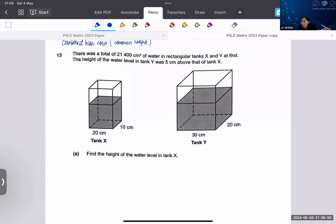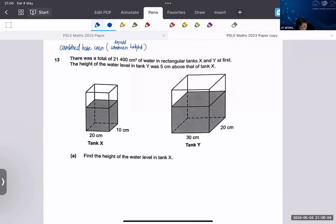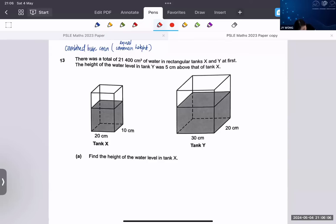There was a total of 21,400 cubic centimeters of water in both tanks, so these two parts add up to give you 21,400. Now if you've got the answer 23, then congratulations you got it correct.